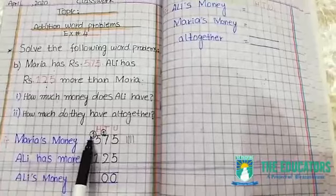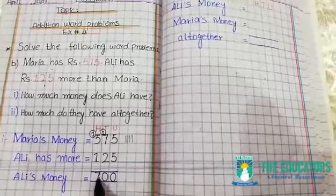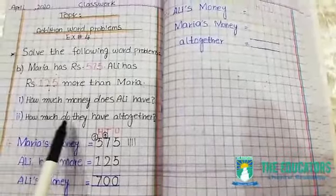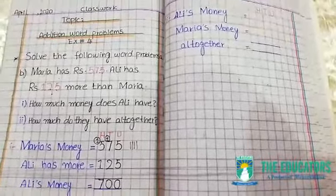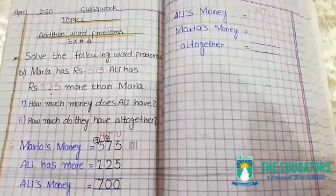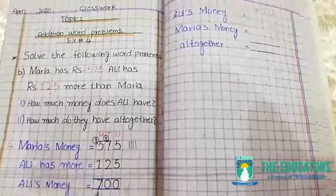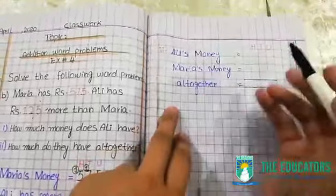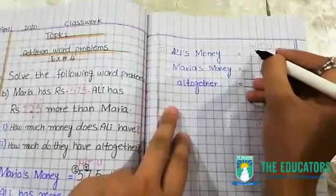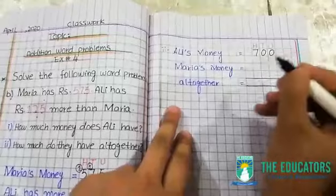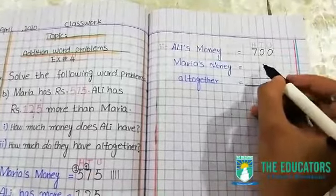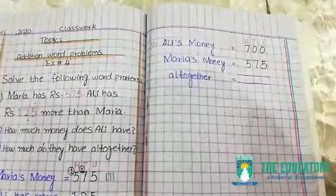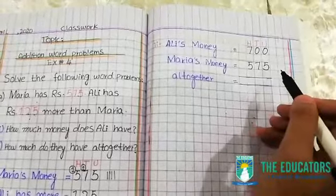Ali ki money kitni aayi — hamare paas 700 rupees. Ab doosra dekho — doosra part tha: how much do they have all together? Matlab un dono ki money ko total karein to wo kitni aayegi. Mariya ki money thi, aur Ali ki money humne yahan nikaal li. Ab hum in dono ko add kar dein to hamare paas total money pata chal jayegi. Ali ki money aayi hai 700, aur Mariya ki money hai 575 rupees. Agar hum in dono ko add kar dein to hum total money pata kar lenge.